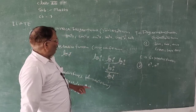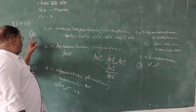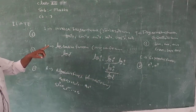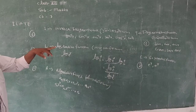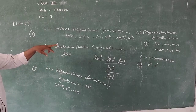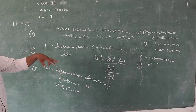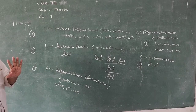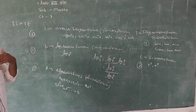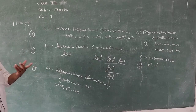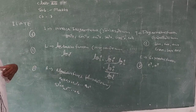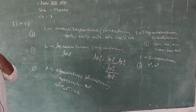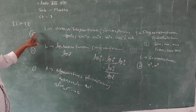So counting the formulas: 6 inverse trig, then 6, 7, 8 algebraic, 8 and 6 makes 14, 15, 16. So let us now write the 20 formulas. Keep in mind the variable. With x variable, dy upon dx will be found.